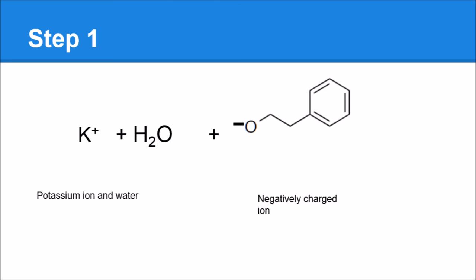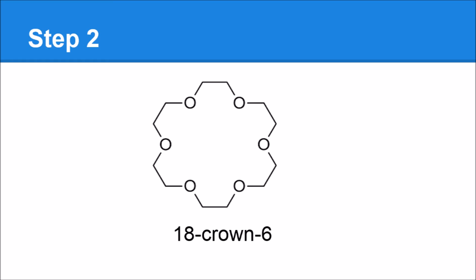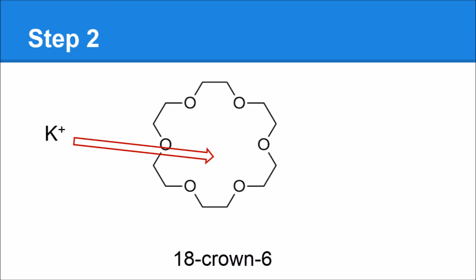The second step involves 18-crown-6, which is the catalyst. The potassium K⁺ ions interact really favorably with this catalyst because it has so many polar oxygens in the middle — it can fit snugly right in here. Once it fits in with the catalyst, it's out of the reaction, leaving the phenylethanol with an O⁻ on the end in an unstable state because there's no potassium to stabilize it.